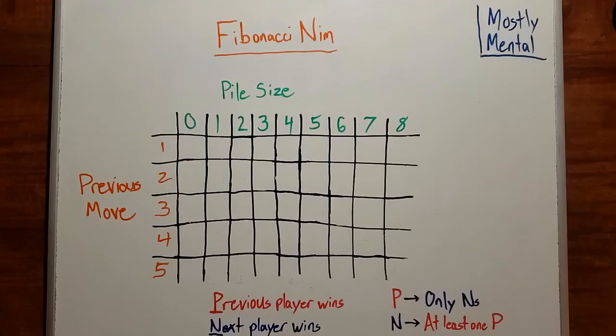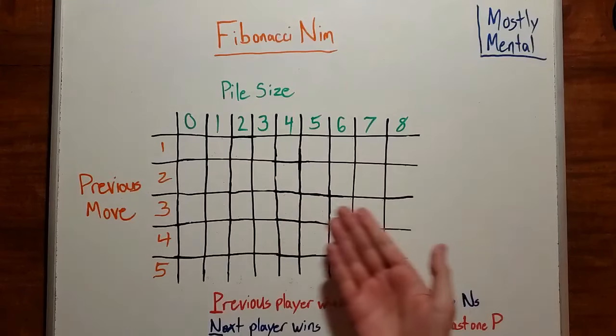We'll set aside the first move of the game for a moment, since it follows slightly different rules. For any other move, we've got a position that can be described by 2 numbers: the size of the pile and how many ducks the opponent took on the previous move. And whenever we have something described by 2 numbers, it's natural to put it into a table.